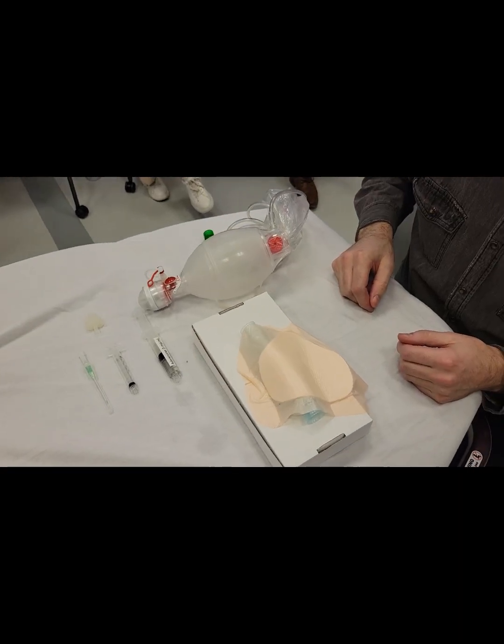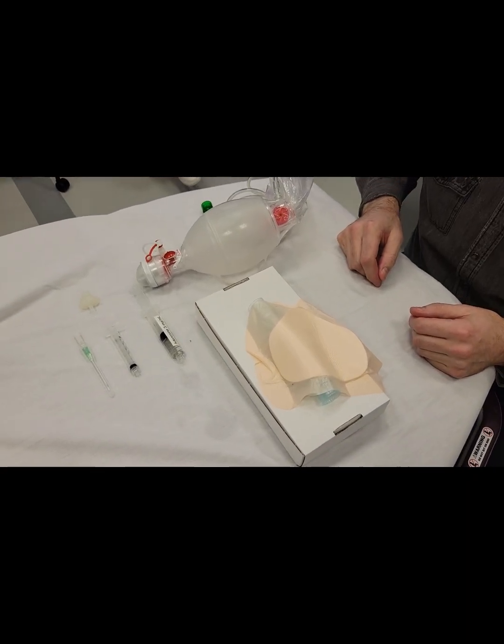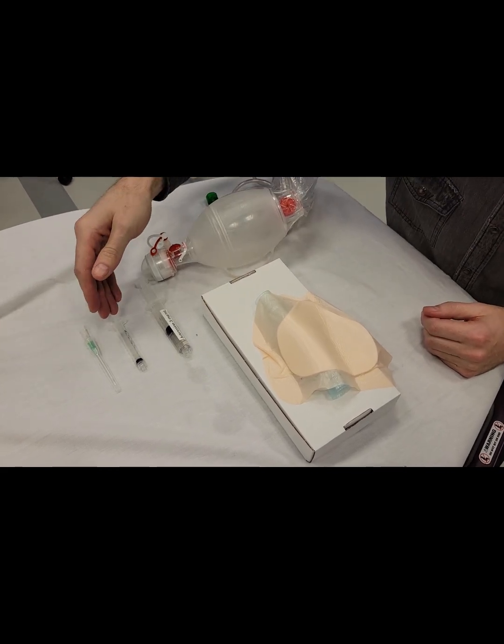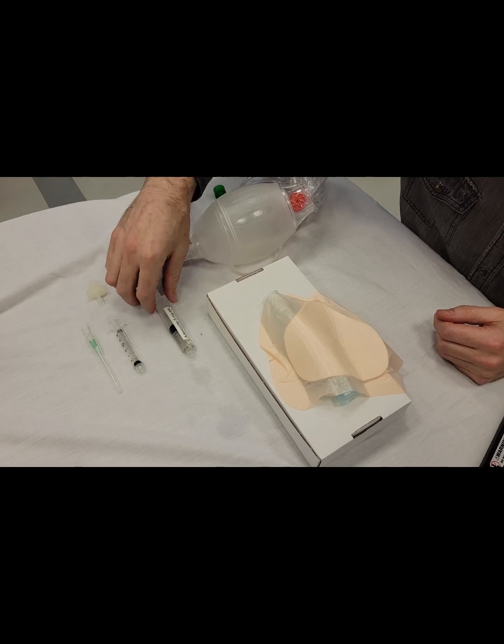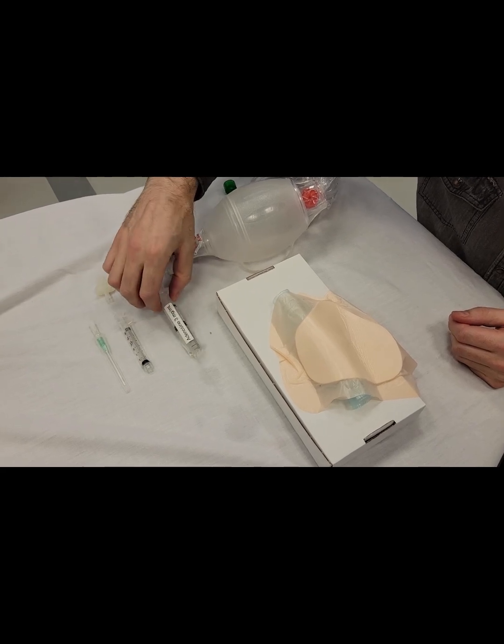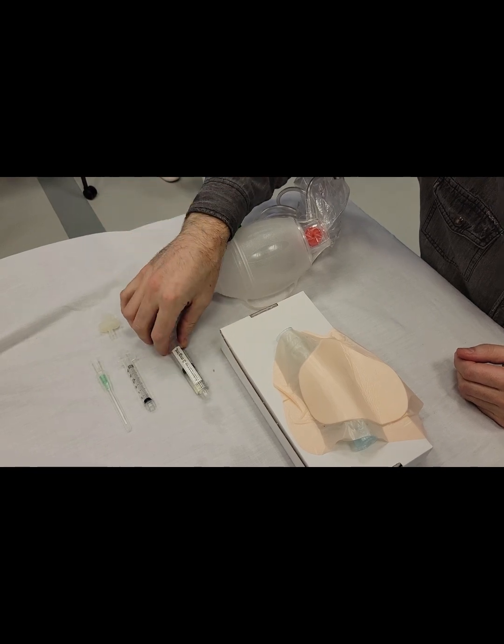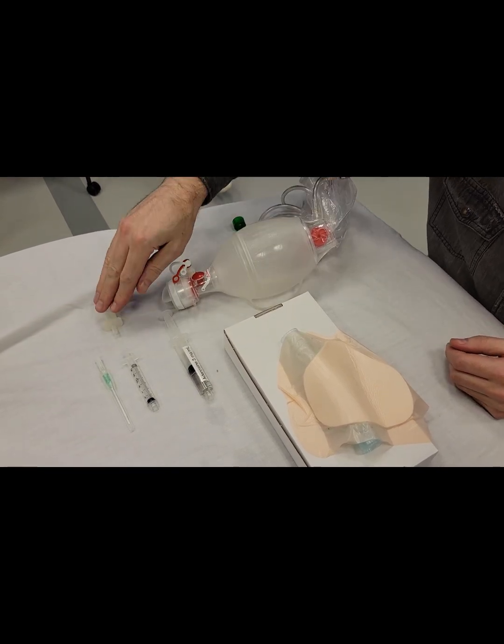Here we have our equipment for the needle pediatric cricothyroidotomy that's going to be used in patients under 10 years of age. So we have our needle, 3 milliliter syringe, and then our larger 10 milliliter syringe filled with saline that'll be used for aspirating, and our BVM and our ET tube connector.